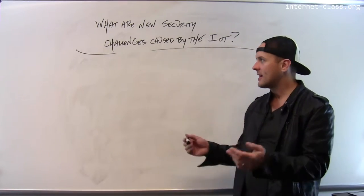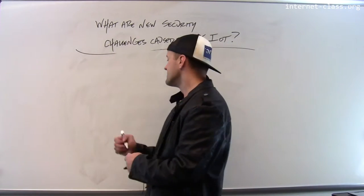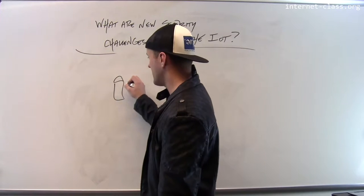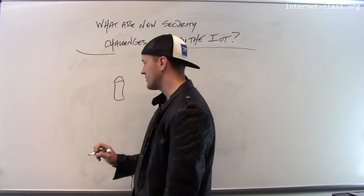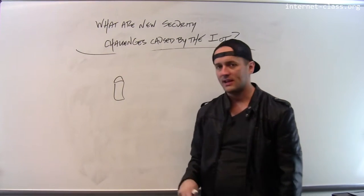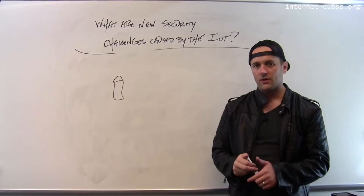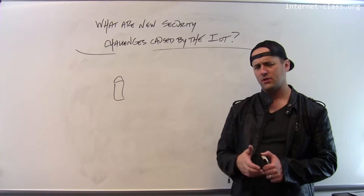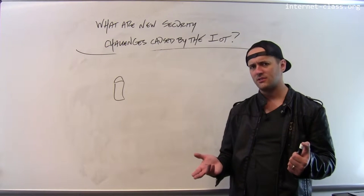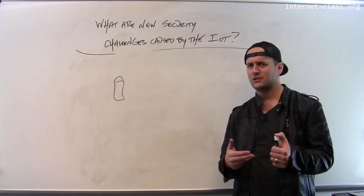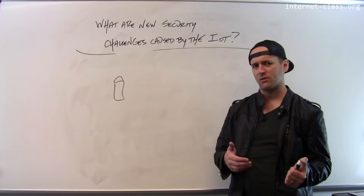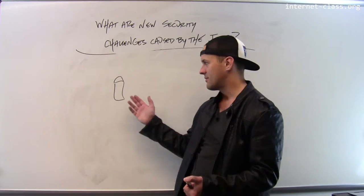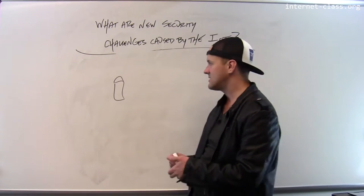So let's think about some cases. Let's say I have an IoT toaster oven — a smart toaster that's connected to the Internet. It uses that connection to download new software updates and to find new toast settings that work well for me. But it's connected to the Internet.